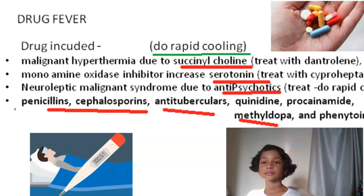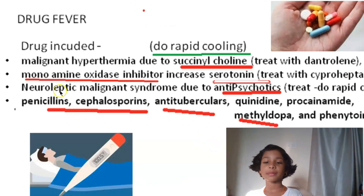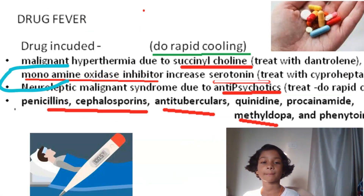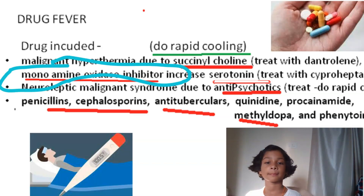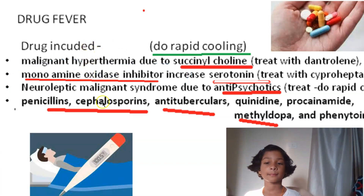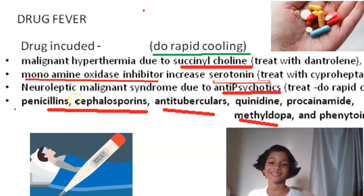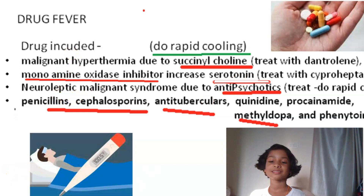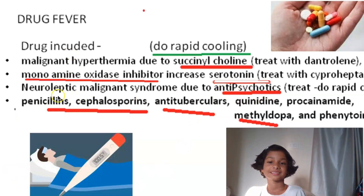The other drug that can cause drug fever is a monoamine oxidase inhibitor — MAO inhibitor. MAO inhibitor will increase serotonin and can also lead to drug fever. How will you treat that? You will treat it with cyproheptadine.